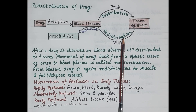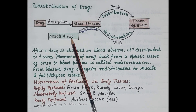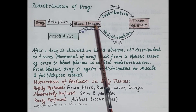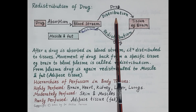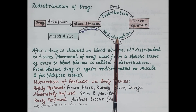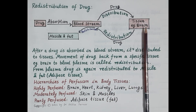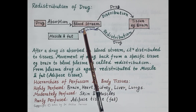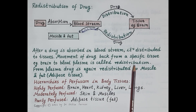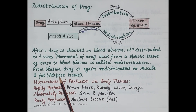Further, from the blood, thiopentone sodium is redistributed to muscle and fat tissue. So the movement of a drug from blood to tissue is termed distribution, while the movement of a drug from the tissue back to the blood is termed redistribution. Movement of a drug back from a specific tissue — for example, from the brain to the blood plasma — is called redistribution. From the plasma, the drug is again redistributed to muscle and fat, which is the adipose tissue.